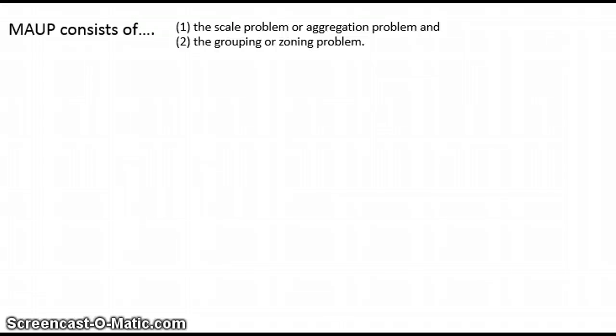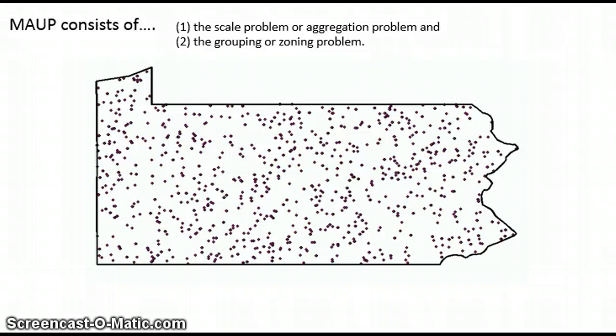So to give a working example quickly, I've created points in ArcGIS. These are randomly distributed throughout the state of Pennsylvania and then aggregated them using different aggregation boundaries.